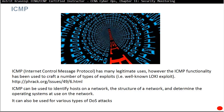ICMP is another protocol we use every day — ping, traceroute — essential tools. But ICMP has been proven to be exploitable. ICMP functionality has been used to craft a number of exploits. For example, ICMP can be used to identify hosts on the network — echo and echo reply confirm a device is present, and traceroute reveals the path to a destination.